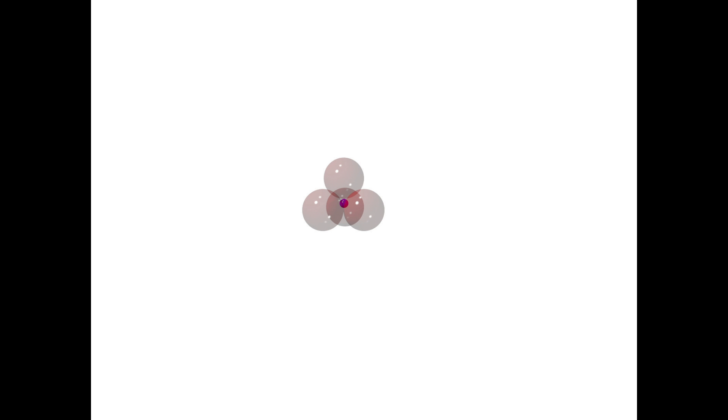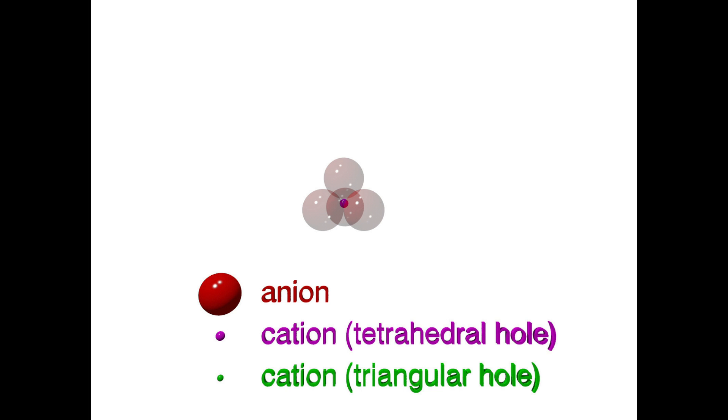This tetrahedral hole is larger than the triangular hole. Therefore, it can accommodate a slightly larger cation.